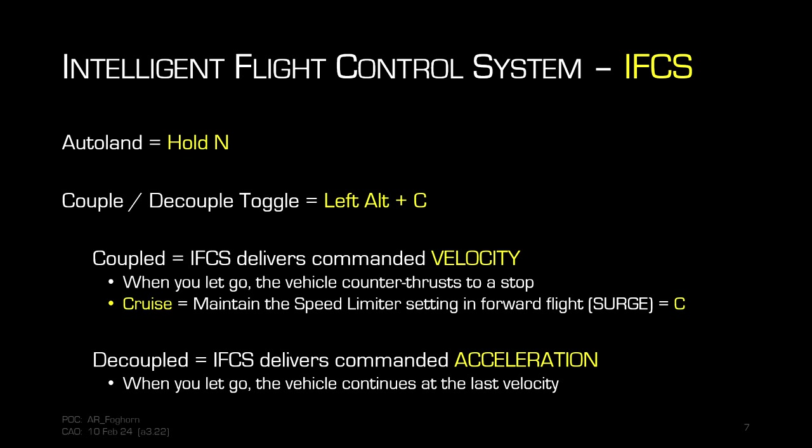Coupled means that the IFCS is delivering a commanded velocity. When you hold W to fly forward — to surge — it will go to whatever the commanded velocity is. When you let go of that input, you are commanding zero velocity, and the IFCS will counter-thrust back to a stop. If you don't want to hold W the entire time, you can use cruise — just the letter C — which will maintain whatever the speed limiter setting is in the forward surge direction. You control that speed limiter via your mouse wheel when seated in a cockpit.